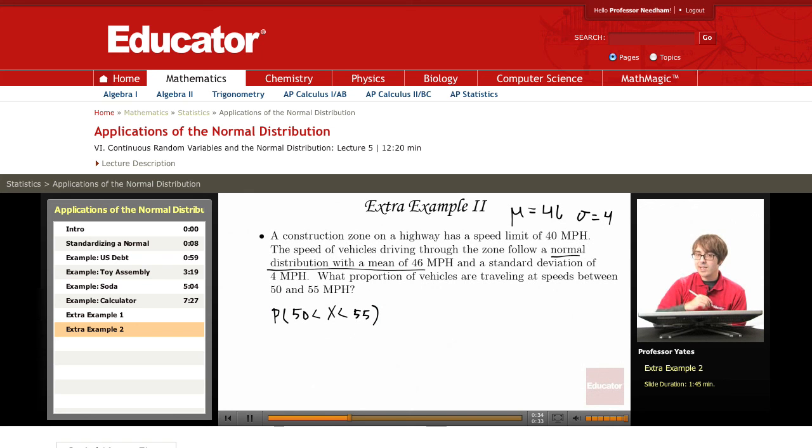So I want to standardize each one of those values. z equals my observation, 50, minus the mean, which is 46, divided by the standard deviation, which is 4. That gives me a value of z that's 1.